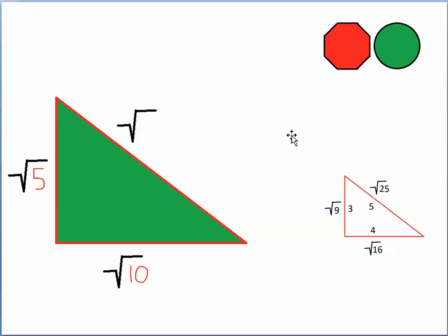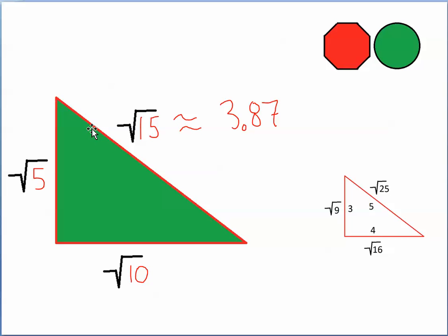Let's take a look at another one. We know the length of this leg is the square root of 5, and we know the length of this leg is the square root of 10. The number 5 plus the number 10 is 15. So the length of the hypotenuse is the square root of 15. The square root of 15, correct to two decimal places, is 3.87.